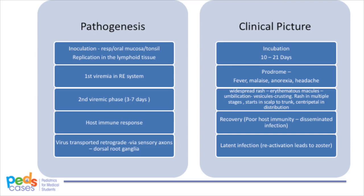This virus lies dormant; however, it can reactivate later in life to cause herpes zoster, more commonly known as shingles. In an immunocompromised patient, the virus can disseminate and land in multiple organs, thus causing serious disseminated varicella infection.